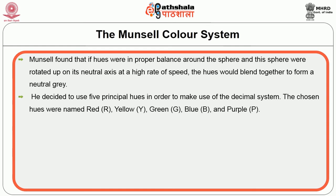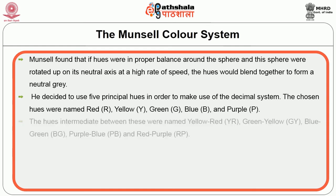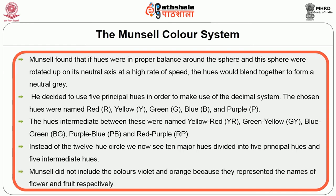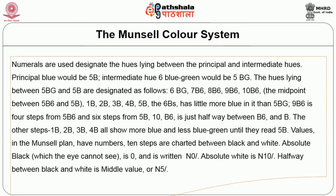Munsell decided to use five principal hues to make use of the decimal system. The chosen hues were named red, yellow, green, blue and purple. The hues intermediate between these were named yellow-red, green-yellow, blue-green, purple-blue and red-purple. Instead of the twelve-hue circle, we now see ten major hues divided into five principal and five intermediate hues. Munsell did not include violet and orange because they represent the names of a flower and fruit respectively. Numerals designate the hues lying between the principal and intermediate hues. Principal blue would be 5B, intermediate hue blue-green would be 5BG.